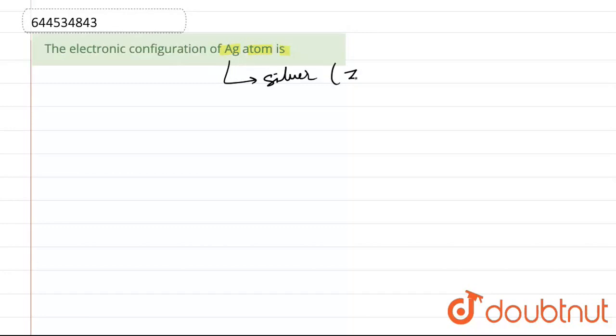Silver, that is having atomic number or you can say Z. Z is equals to 47 in case of silver. So, silver metal.